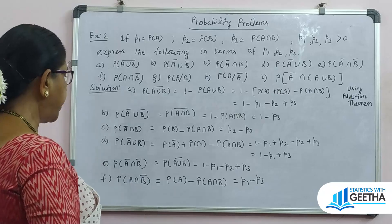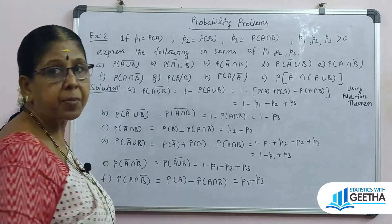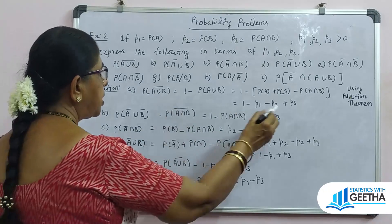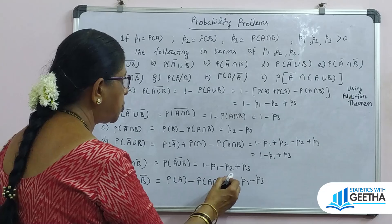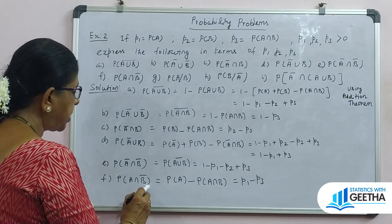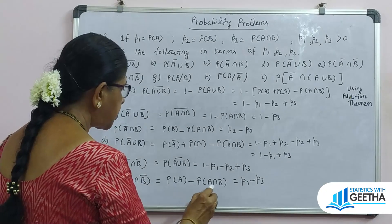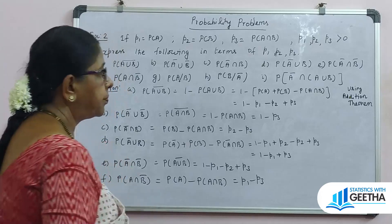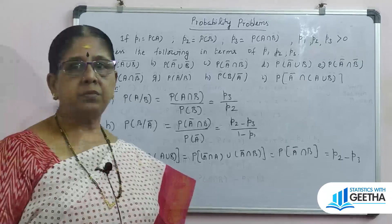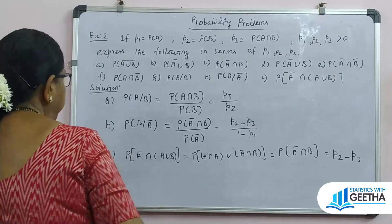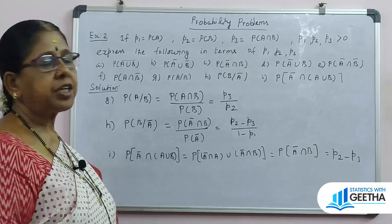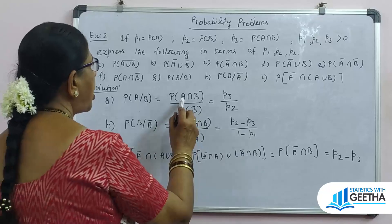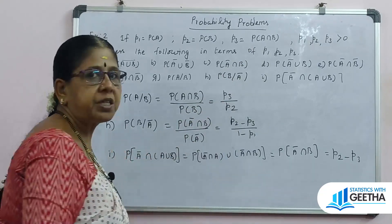For (e): probability of A complement intersection B complement equals P((A union B) complement) equals 1 minus P1 minus P2 plus P3. For (f): probability of A intersection B complement equals P(A) minus P(A intersection B) equals P1 minus P3. For (g): probability of A given B — using the conditional probability formula, P(A|B) equals P(A intersection B) divided by P(B), which equals P3 divided by P2.